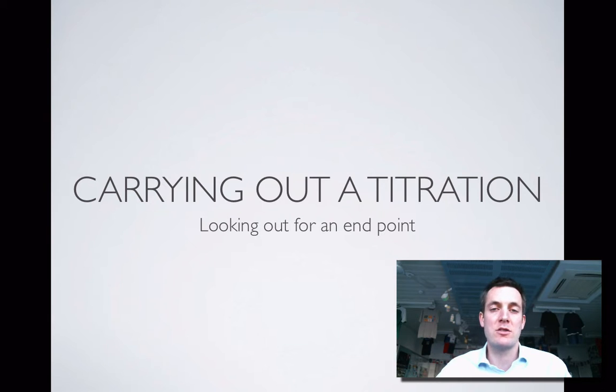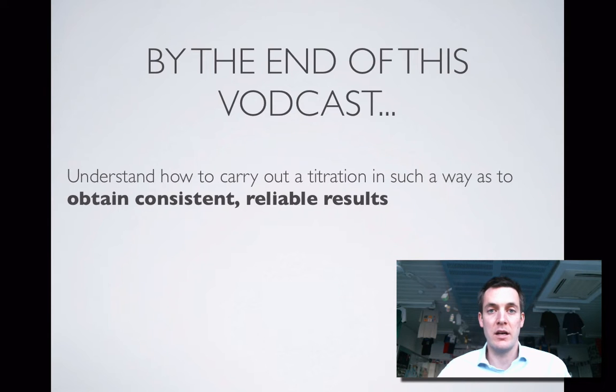We should know how to make a standard solution. We're now going to get these solutions to react together in a reaction where there's some kind of visible sign of when we have added the reactants together in the stoichiometric ratio, and as you probably know by now, we're going to use an indicator to provide this visual sign. As usual, we're going to pay attention to things that we might do in order to get accurate results.